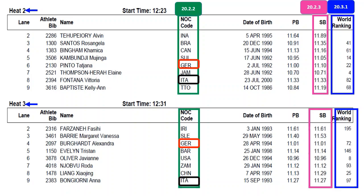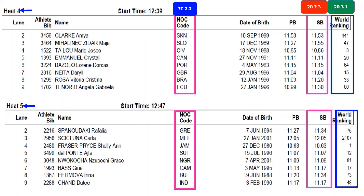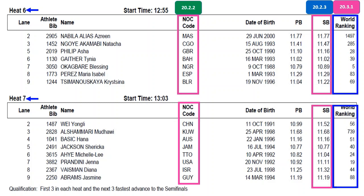This is the heat 4 and 5 start list. This is heat 6 and 7. The first 3 in each heat and the next 3 fastest advance to the semi-finals. That means 7 x 3 = 21, plus 3 fastest, totaling 24 athletes will run in 3 semi-finals.